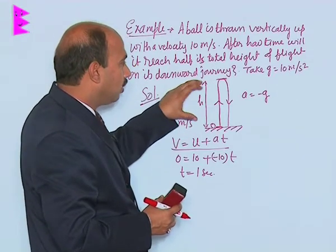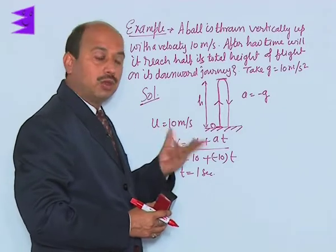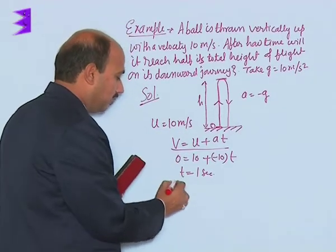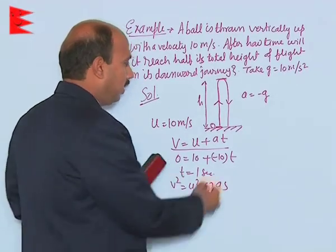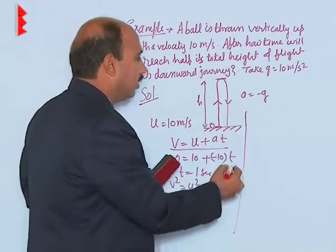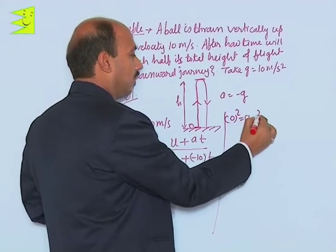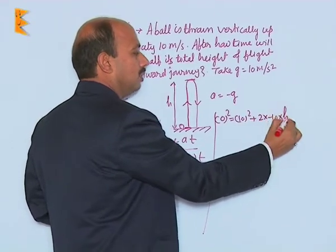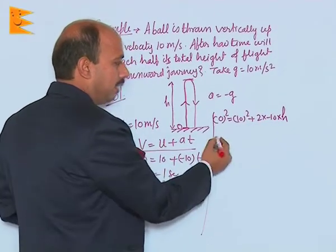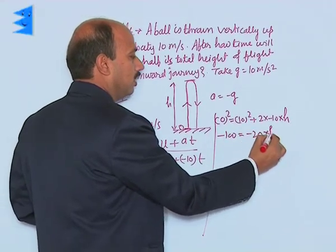Now we can also calculate total height. We can go directly for the displacement velocity relation that is V square is equal to U square plus 2 A s. You will be getting here 0 is equal to 10 square plus 2 into minus 10 into h.